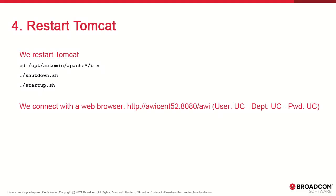AWI is configured, so we restart Tomcat. You can then connect to AE over a simple web browser. The URL should be the AWI hostname, the default 8080 Tomcat port, slash awi. We'll log into the application using the default administrator credentials at installation. User, department, and password are all uppercase UC.